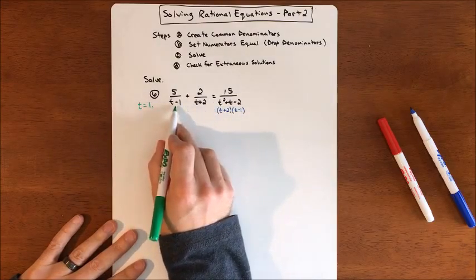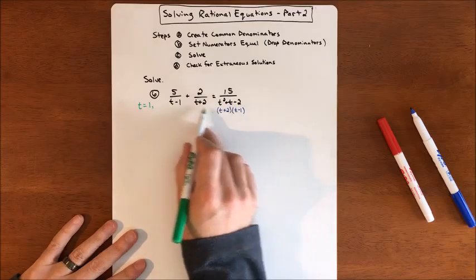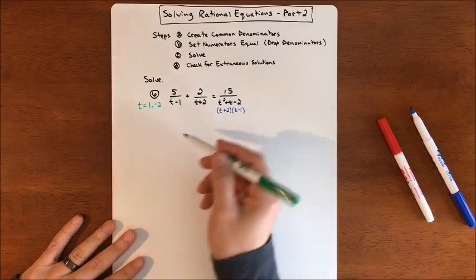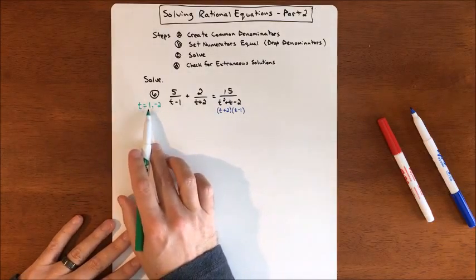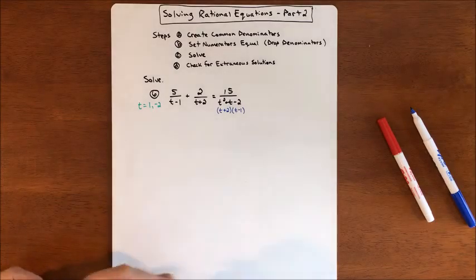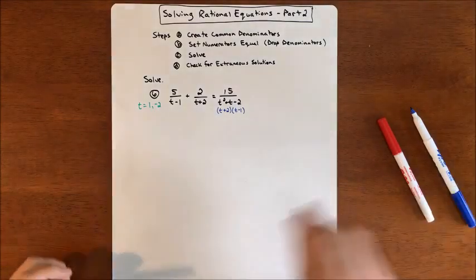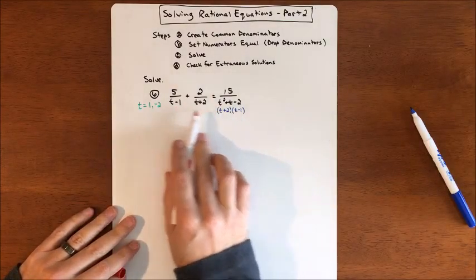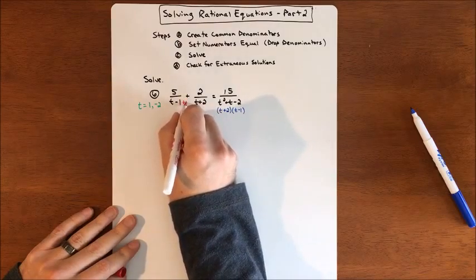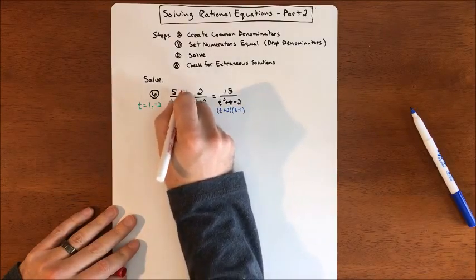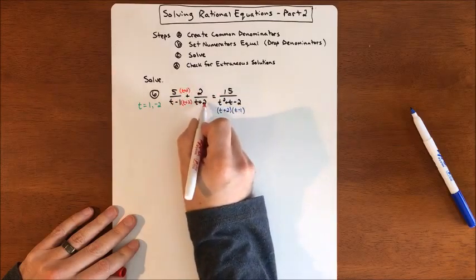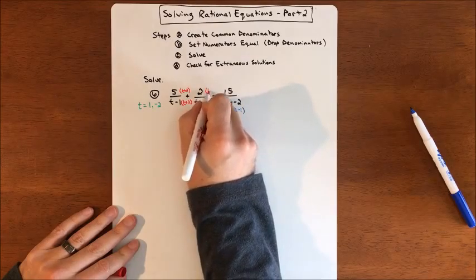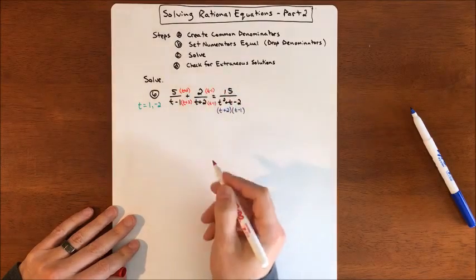So t equals one would make this denominator zero, and negative two is also going to be an issue. We've got to keep those in the back of our mind — once we solve this problem, if we get one or negative two, we've got to kick them out. Now we're ready to go. We have a t plus two and a t minus one. This first fraction doesn't have a t plus two, so we need to multiply t plus two to the top and bottom. The second fraction doesn't have a t minus one, so we'll multiply top and bottom by t minus one.